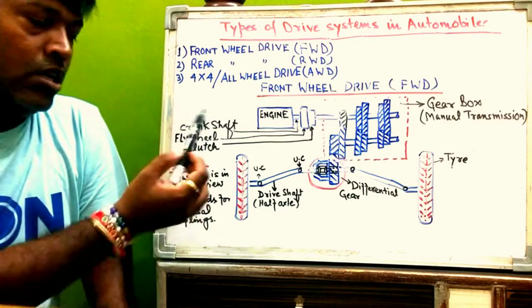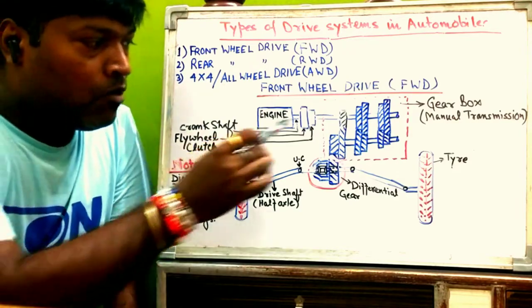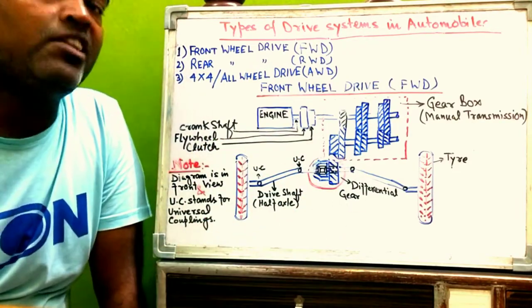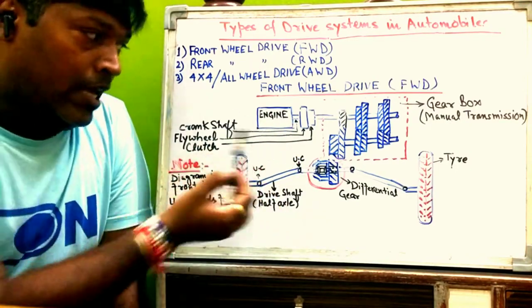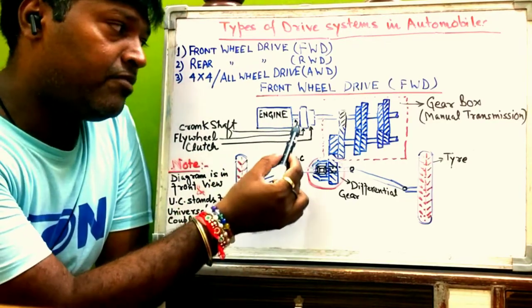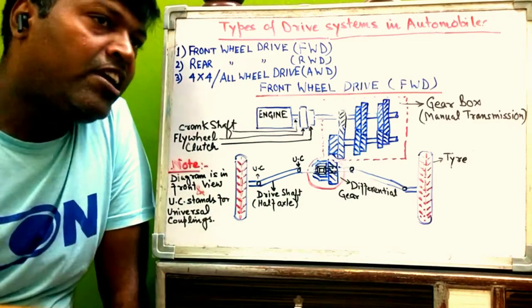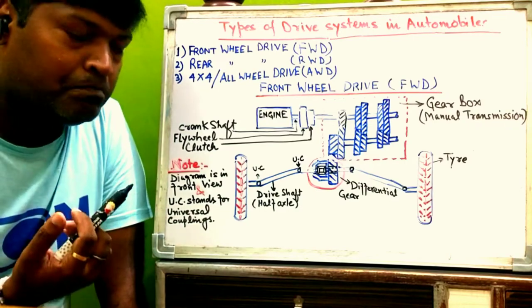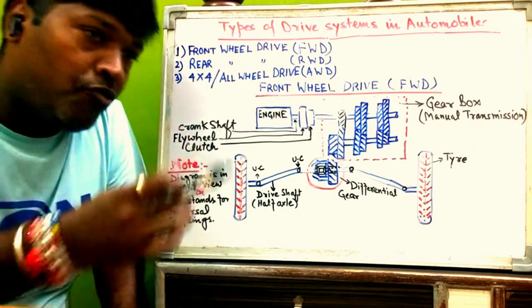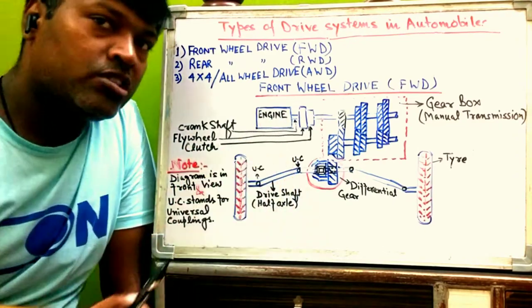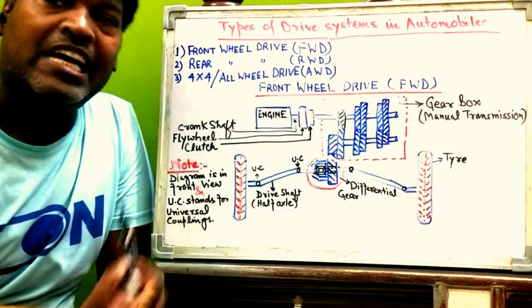The engine generates power, which is used to drive the front wheel drive vehicle. Next to the engine is the crankshaft coming out from the engine, and on this shaft a flywheel is mounted. The flywheel is basically a kind of reservoir — in idle condition, when the vehicle is not running, it stores energy.